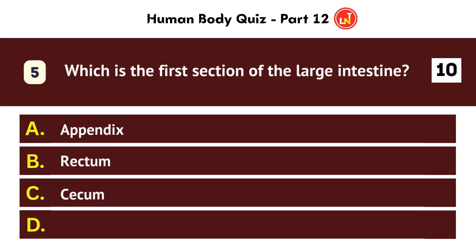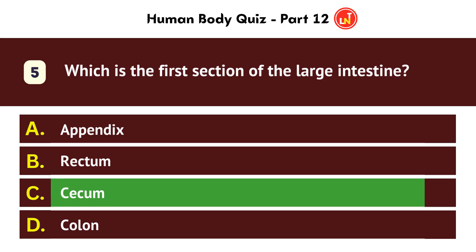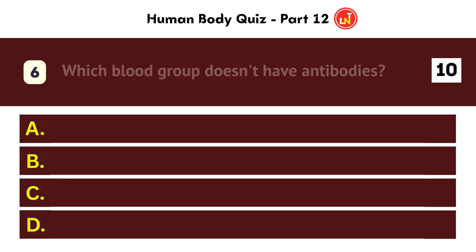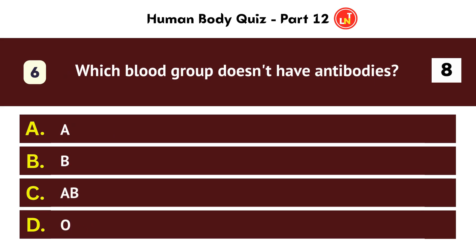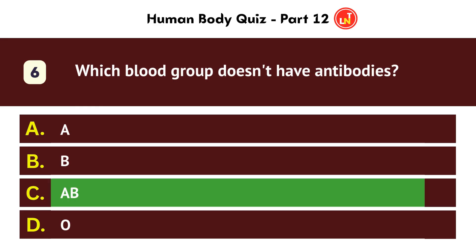Which is the first section of the large intestine? Cecum. Which blood group doesn't have antibodies? AB.